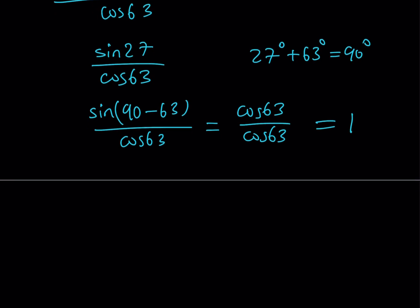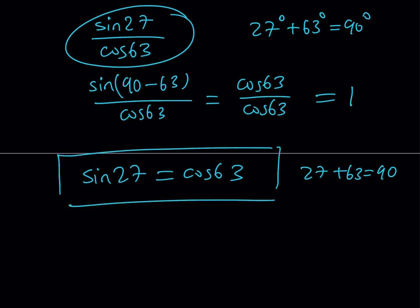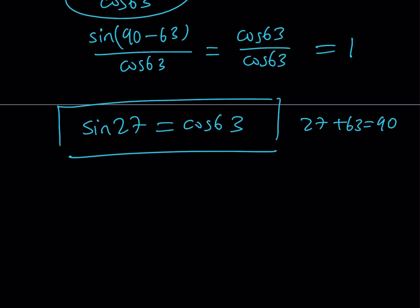So this whole expression basically simplifies to 1. You could also do the following: sine 27 is the same as cosine 63 because 27 plus 63 is 90 degrees. And you can draw a right triangle with these angles and just verify this identity.